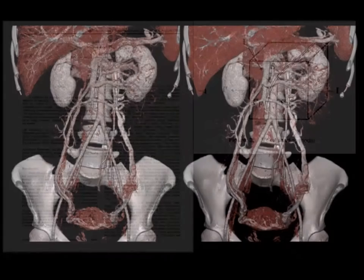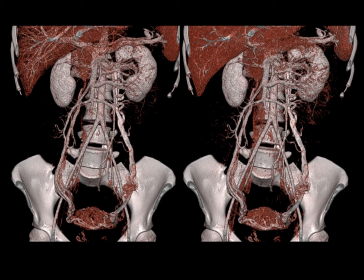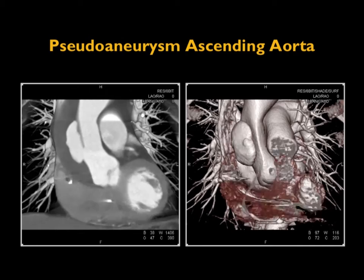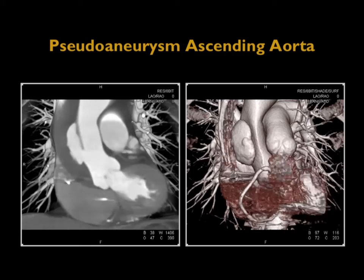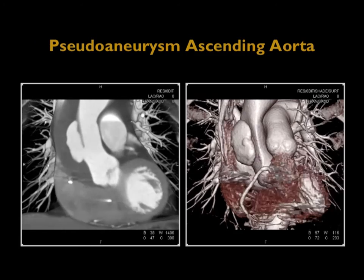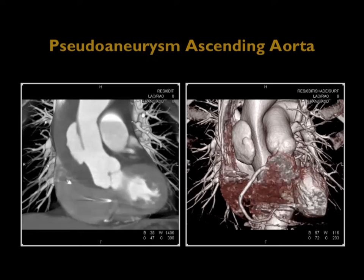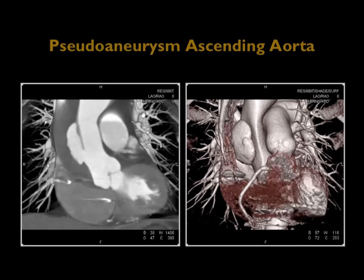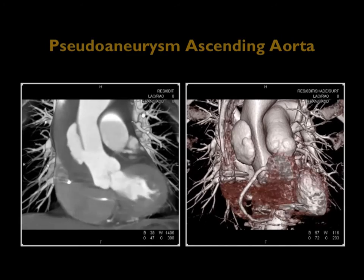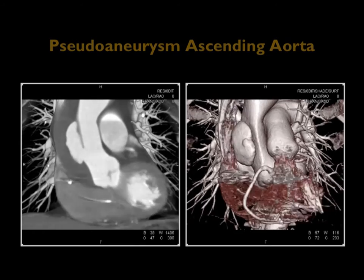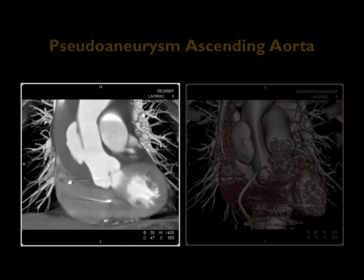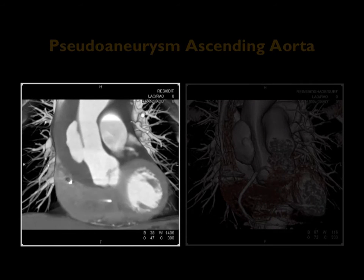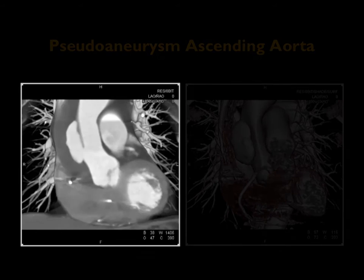With volume rendering you typically have one light source but you can use it very well. Here I'm showing you the aorta and the veins, the gonadal veins, the kidneys, the liver, or the patient's vessels of the heart with a pseudoaneurysm. Particularly on the image on your right with the color coding, you get a very good feel of the shading models and lighting models that give you a three-dimensional feel compared to the MIP projection on your left.